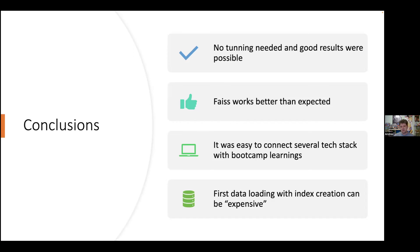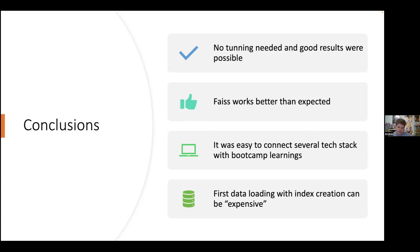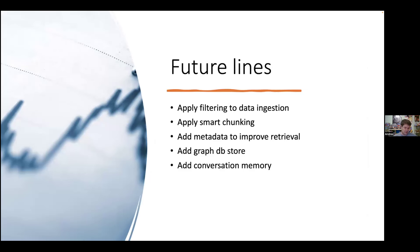What was very surprising is that the vector index works better than expected. The index took 400 megabytes for 100 URLs and about seven minutes to crawl the whole website at level four out of five depth in the sitemap definition. It was also easy to connect several tech stack components with bootcamp learnings. The first load of data with index creation was a little bit expensive.